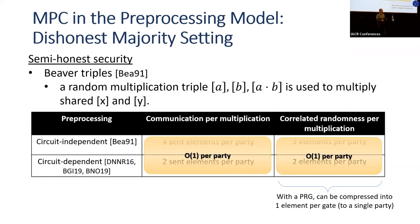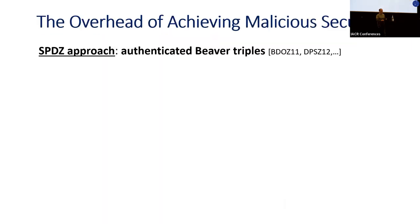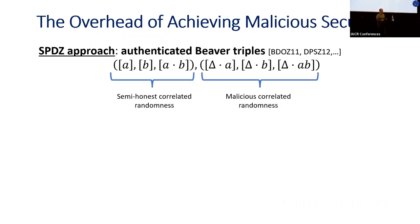For malicious security, we need authenticated Beaver triples. The leading approach over the last decade is the SPDZ approach, where the dealer gives the parties shares of authenticated Beaver triples. Each triple is multiplied with a random global authenticator kept secret, which allows the parties to detect cheating.